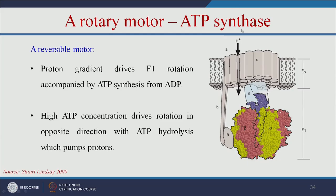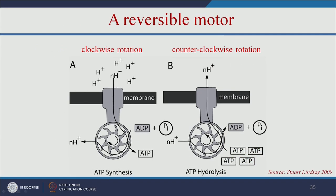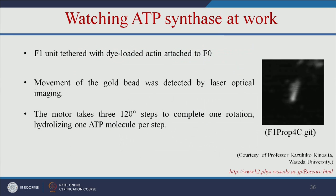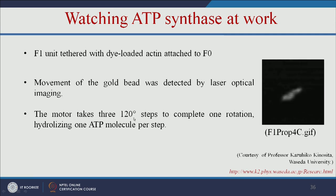Let us see ATP synthase. The proton gradient drives F1 rotation, accompanied by ATP synthesis from ADP. High ATP concentration drives rotation in the opposite direction with ATP hydrolysis, which pumps protons. During ATP synthesis it rotates clockwise, and during ATP hydrolysis it rotates counterclockwise — so it is a kind of reversible motor. The F1 unit was attached with dye-loaded actin, and you can see the movement of a gold bead by laser optical imaging showing rotatory motion. The motor takes three 120-degree steps to complete one rotation and hydrolyzes one ATP molecule per step.